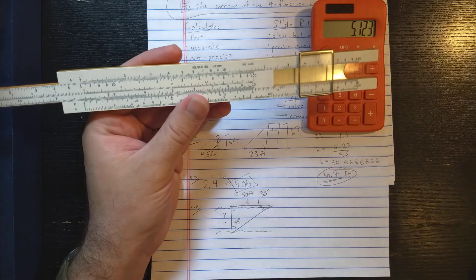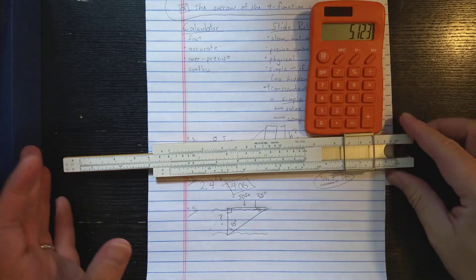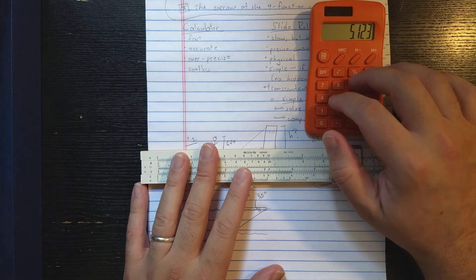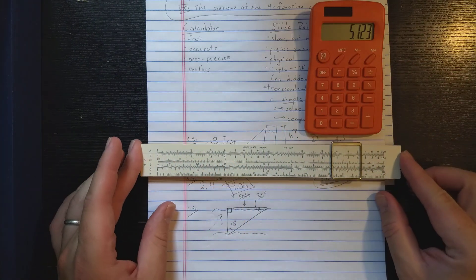So, you know, a more advanced slide rule would make that calculation easier. But at least it's possible on this, right? Whereas it's not really possible on the four function calculator to do that calculation.